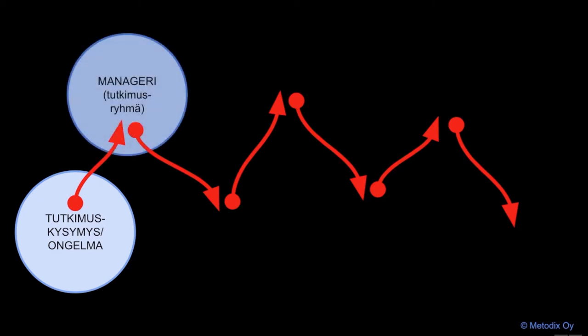Tutkimusprosessi etenee, kun täytetään muutkin roolit kuin tilaaja. Tärkeä, ellei tärkein tehtävä on Delphoi-managerilla, jonka tehtävä on ensivaiheessa rajata ja tavoitteistaa tutkimuskysymys yhdessä tilaajan kanssa. Manageri tai manageriryhmä suunnittelee, toteuttaa ja raportoi tutkimuksen – hänen roolinsa on kutakuinkin sama kuin perinteisellä tutkijalla. Managerin työkalut ovat kysely ja paneeli.